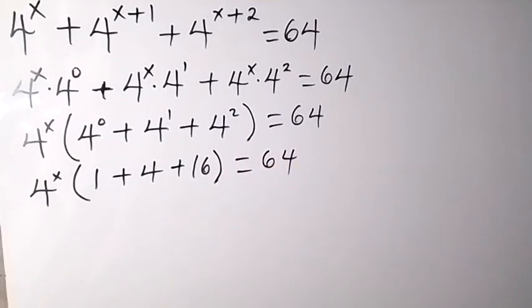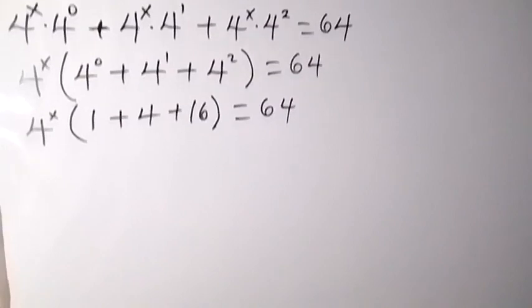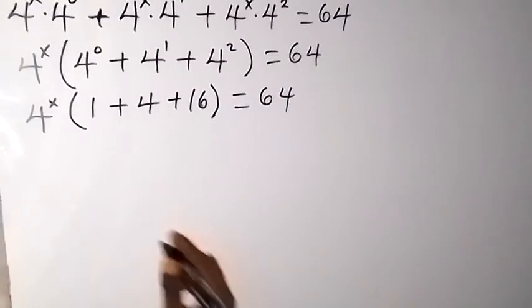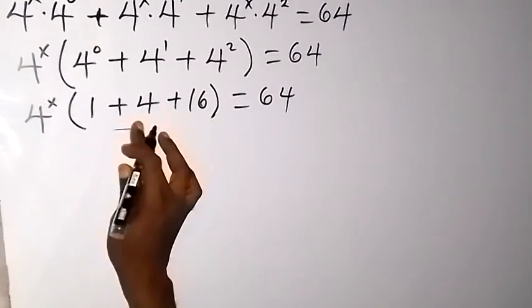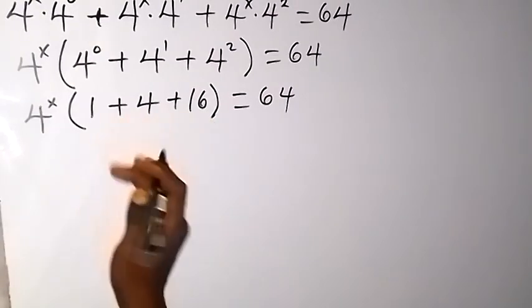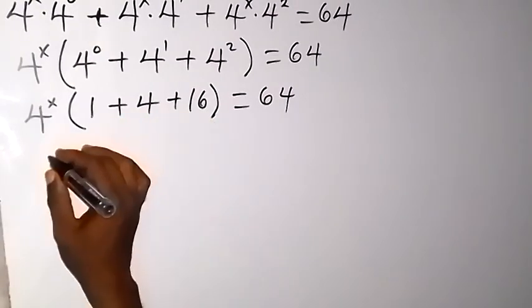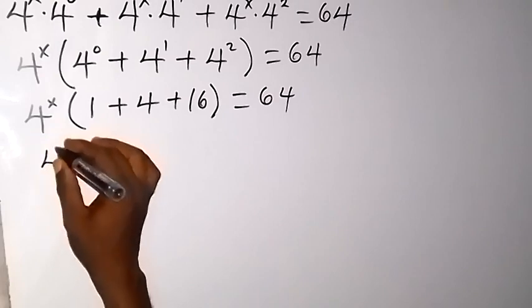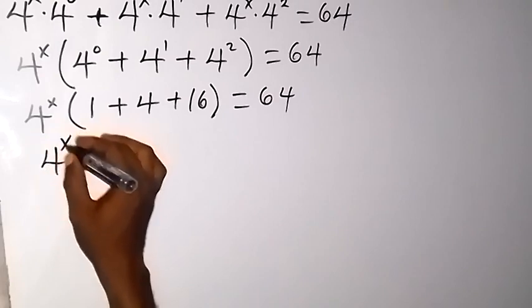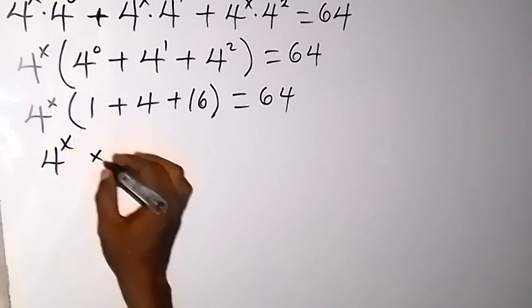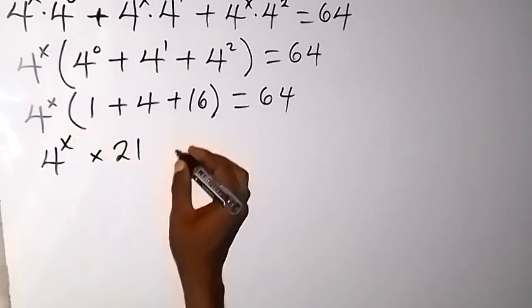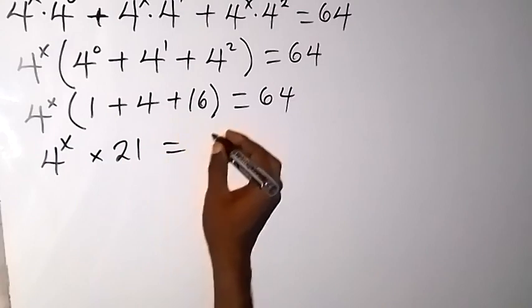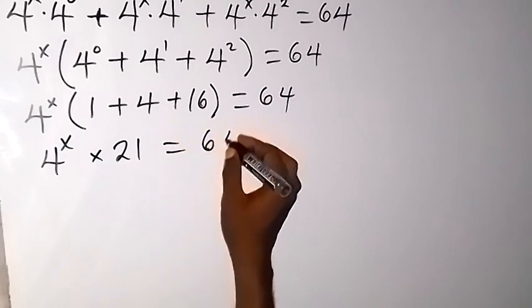When we add everything in the bracket — 1 plus 4 plus 16 — that gives us 21. So we have 4 raised to power x multiplied by 21 equals 64.